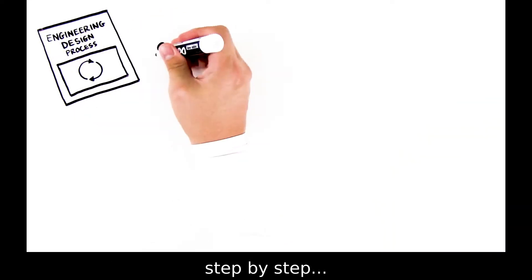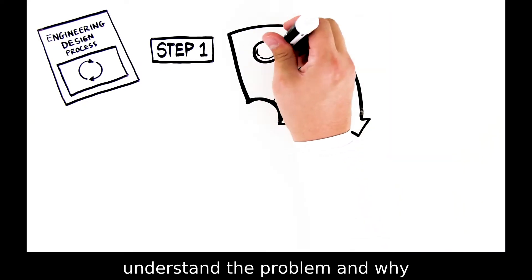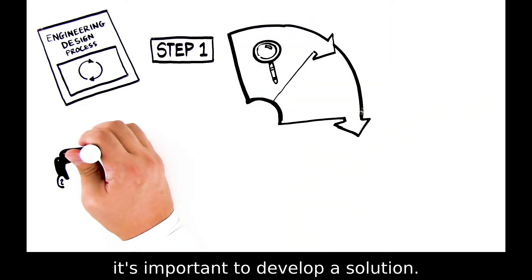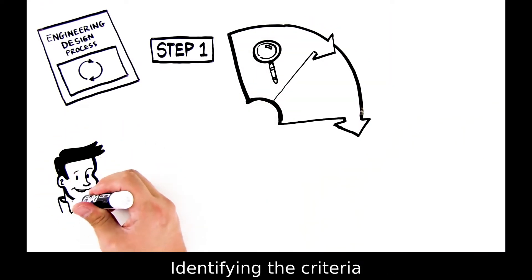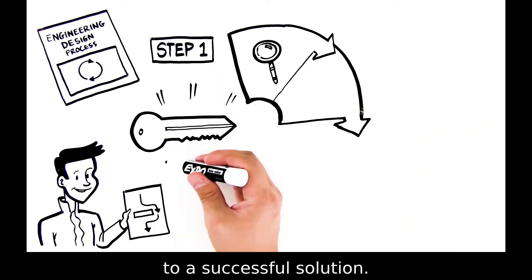Here's the Engineering Design Process step by step. Step 1: Identify the problem. Your team must first understand the problem and why it's important to develop a solution. Identifying the criteria in the design challenge and considering any constraints is key to a successful solution.